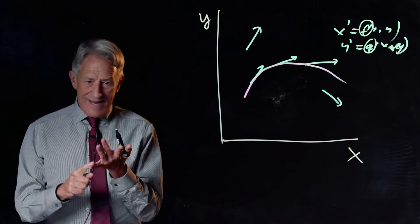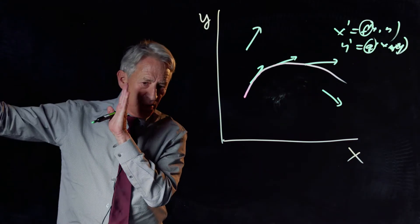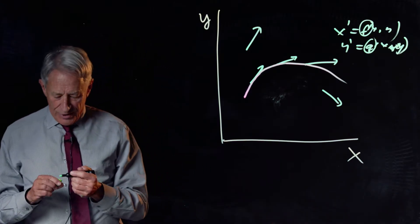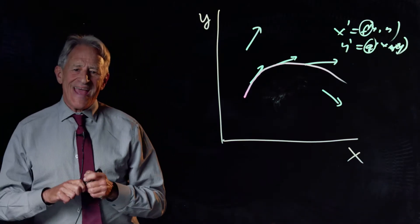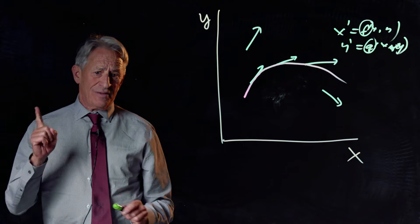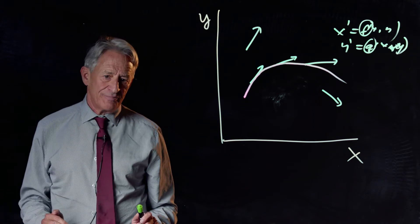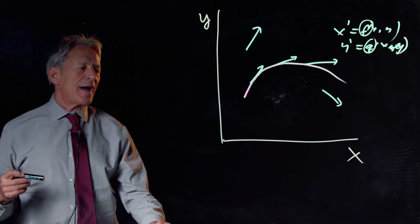We cannot know the red curve. Its formula is not given to us. We cannot know the red curve, but we can approximate the red curve to any degree of accuracy.